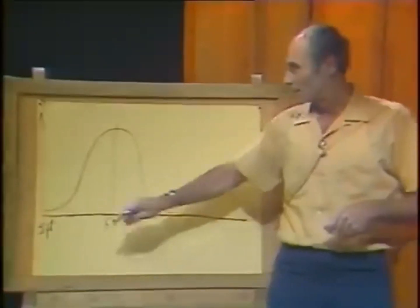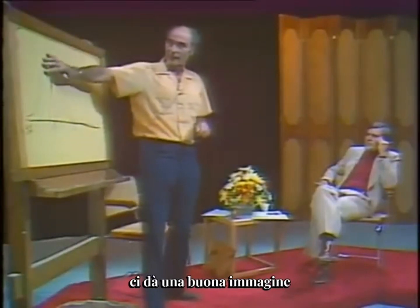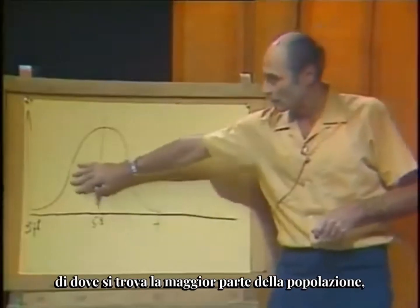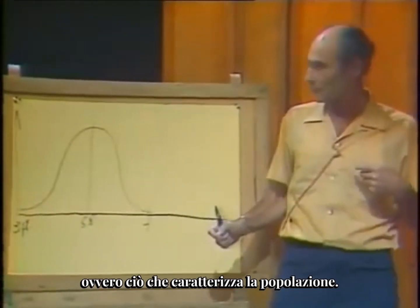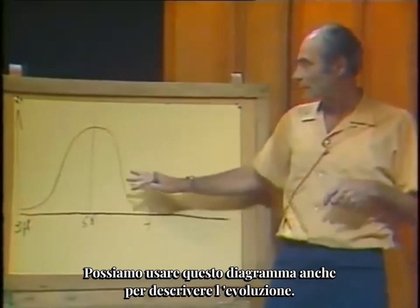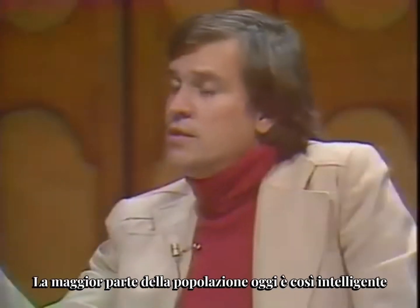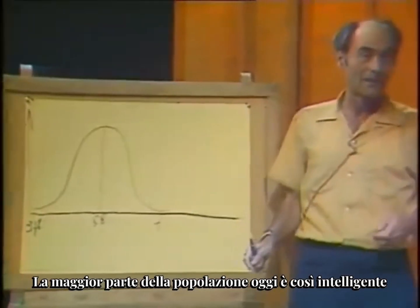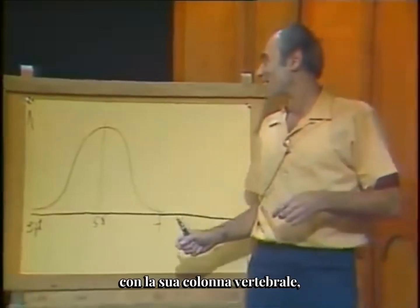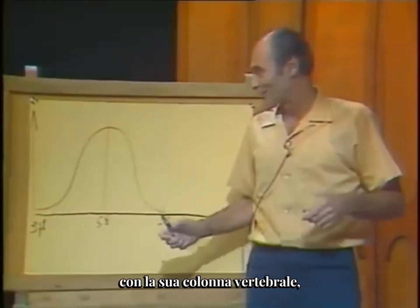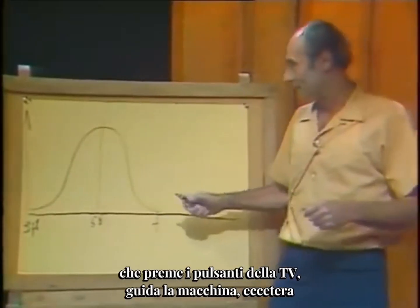This bell curve gives us a good picture of where most of the population is - that is what typifies the population. We can use this diagram also to describe evolution. The bulk of the population today is intelligent, moralizing, bipedal, with a vertical spine, who pushes the buttons on TV and drives a car, et cetera.